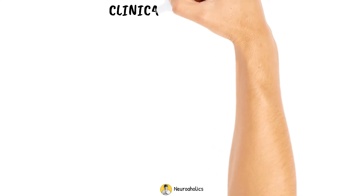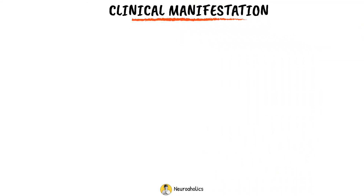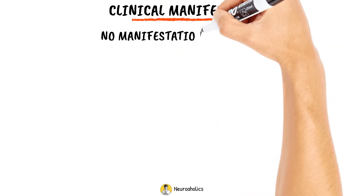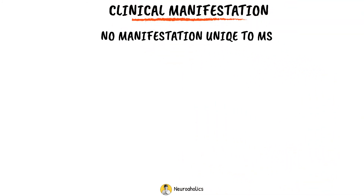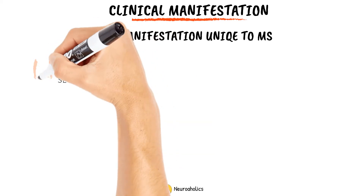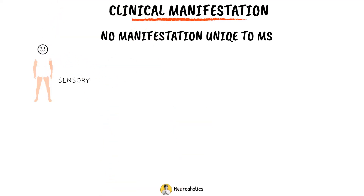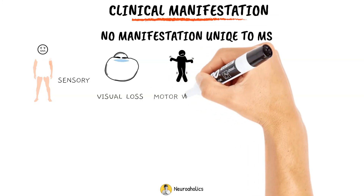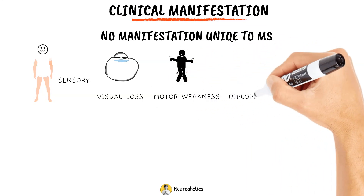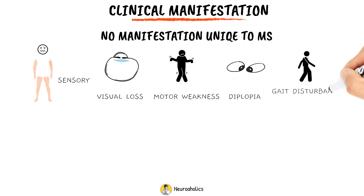Clinical manifestation: there are no clinical manifestations that are unique to MS. Common symptoms and signs of MS include sensory symptoms in the limbs or face, visual loss, acute or subacute motor weakness, diplopia, gait disturbance, and balance problems.